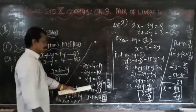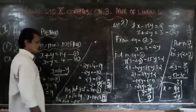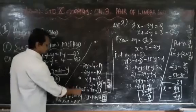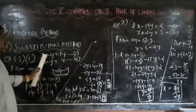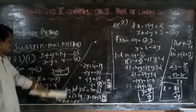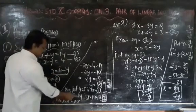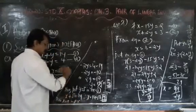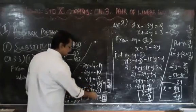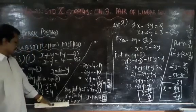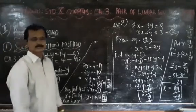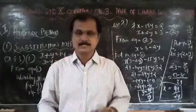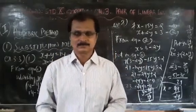Now the value of y is 5. We put y equal to 5 back into equation number 1, which is x plus y equal to 14. So x plus 5 equal to 14, therefore x equal to 14 minus 5, that is x equal to 9. Thus x equal to 9 and y equal to 5 is the solution of the equation.